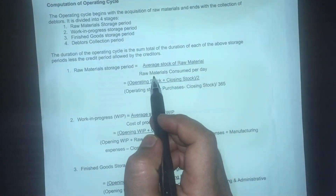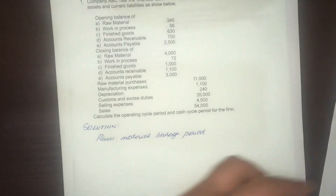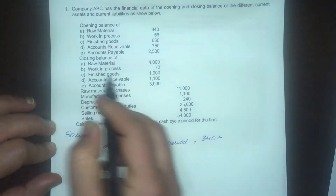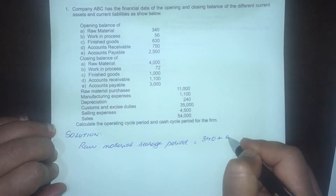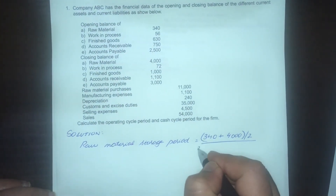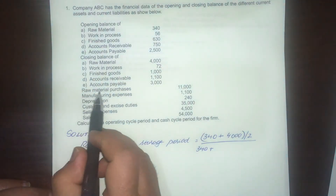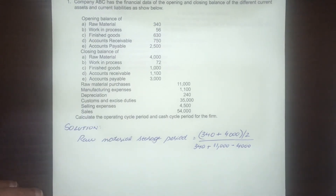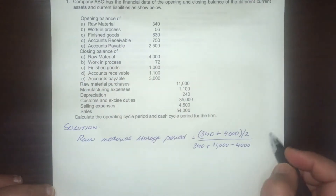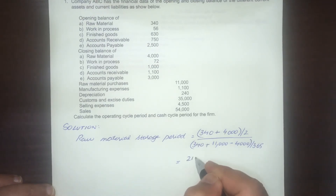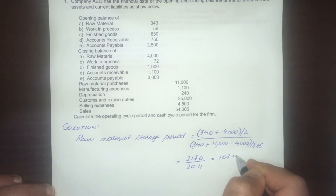The raw material storage period is average stock of raw material divided by raw materials consumed per day. Average stock of raw material is opening stock (340) plus closing balance of raw material (4,000) divided by 2. For raw material consumed: 340 plus purchases of 11,000 minus closing stock of 4,000, divided by 365. The numerator is 2,170 divided by 20.11, giving us 107.91 days.